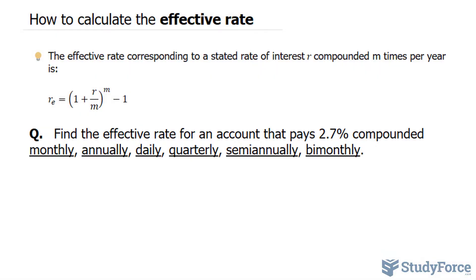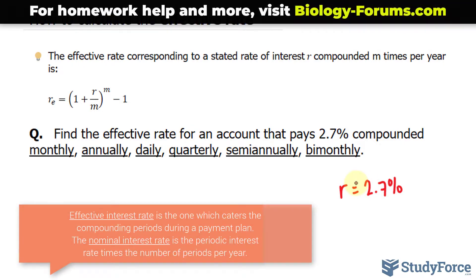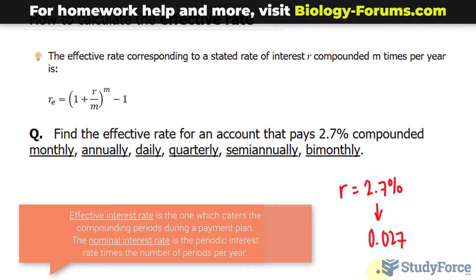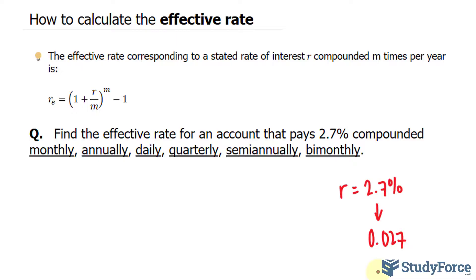So R represents, in our case, 2.7%. We want to convert this as a decimal, so we divide this number by 100. If we divide this by 100, we'll end up with 0.027. So we just found our R, and we can start substituting that into our formula.